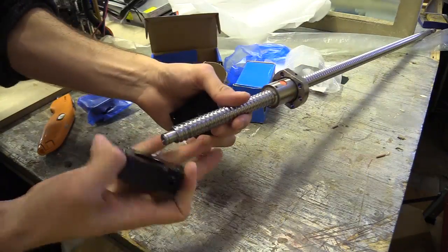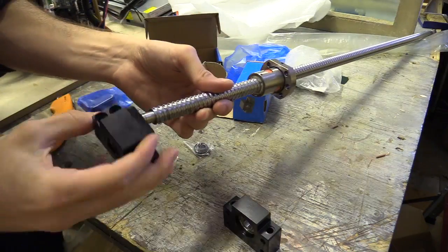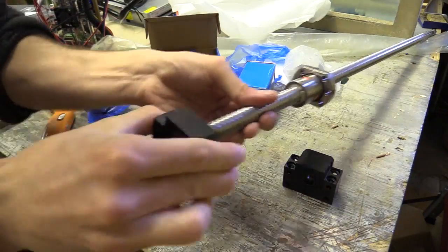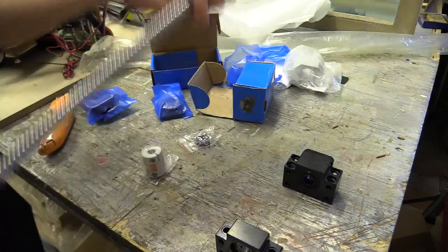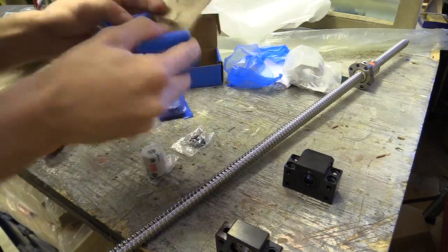The ballscrew has a lead of 5mm. This is indicated by the number after the SFU designation. So 16 is the diameter and 05 is the lead. You can get longer leads but these are often more expensive.